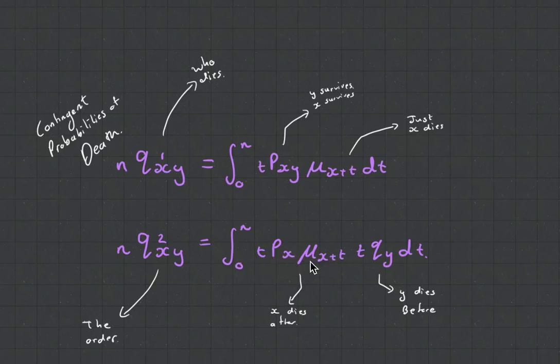X has to survive till time T, then die. That's what we're summing up. And we're adding in this probability that Y has to die before. Now which one will be bigger, nQXY or nQX2Y?